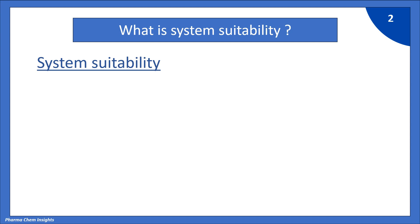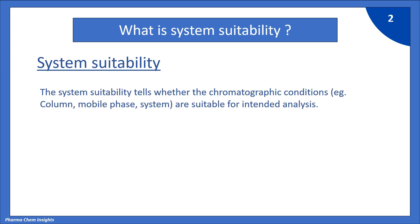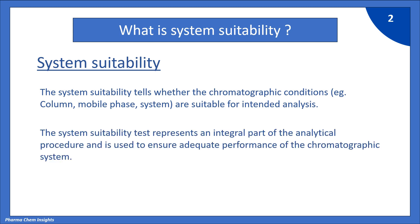What is system suitability? The system suitability tells whether the chromatographic conditions, e.g. column, mobile phase system, are suitable for the intended analysis. The system suitability test represents an integral part of the analytical procedure and is used to ensure adequate performance of the chromatographic system.